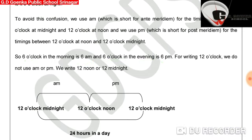For writing 12 o'clock, we don't use AM or PM. It's either 12 noon or 12 midnight.